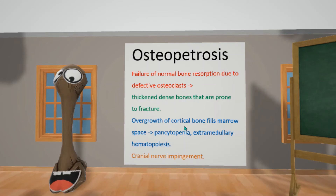Due to the overgrowth of cortical bone that fills the bone marrow space, there's going to be pancytopenia and extramedullary hematopoiesis. And due to the narrowing of foramina, osteopetrosis can result in cranial nerve impingement, which can of course lead to palsies.